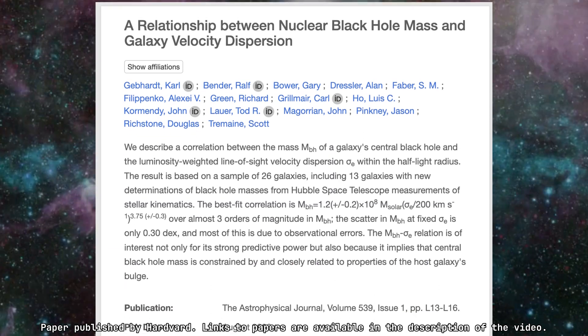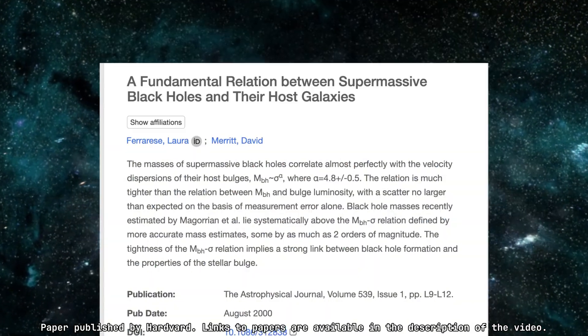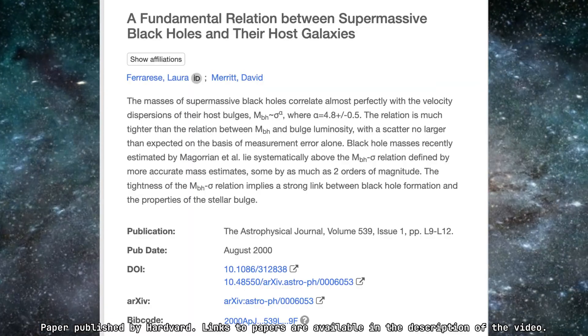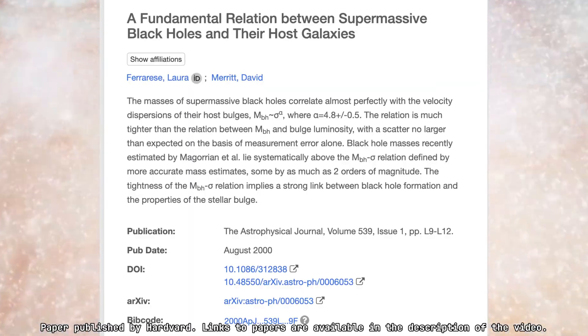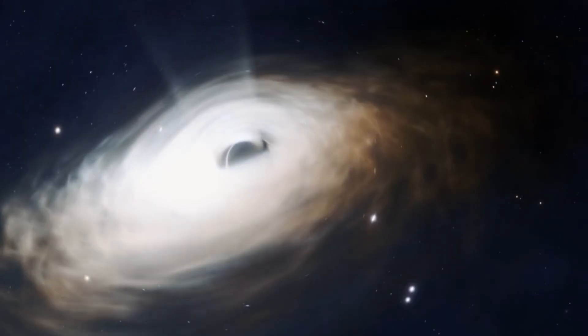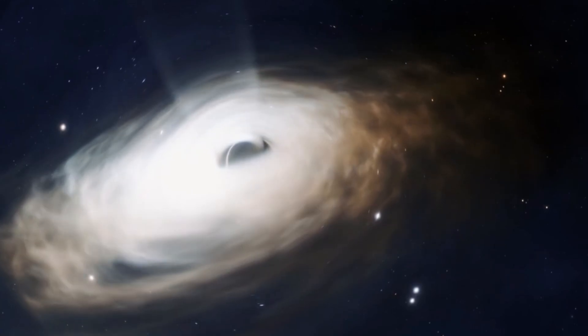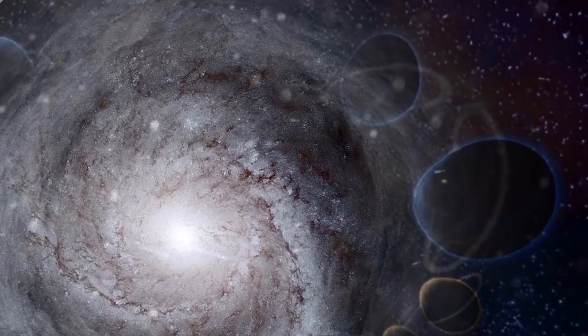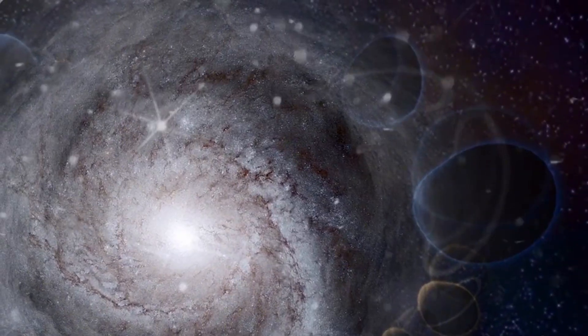This relationship, first outlined in studies like those by Gebhard et al. and Ferreres and Merritt in year 2000, suggests that black holes and galaxies grow in tandem, influencing each other over cosmic time. James Webb's findings are thus reinforcing the idea that black holes are not passive bystanders, but rather active participants in galactic evolution, shaping the cosmos in profound ways.